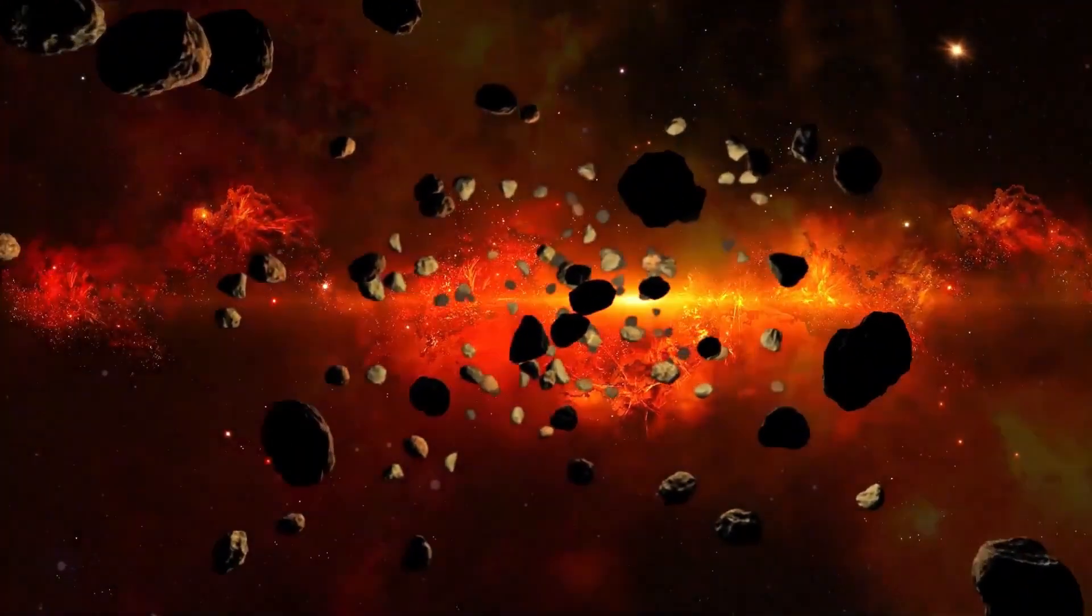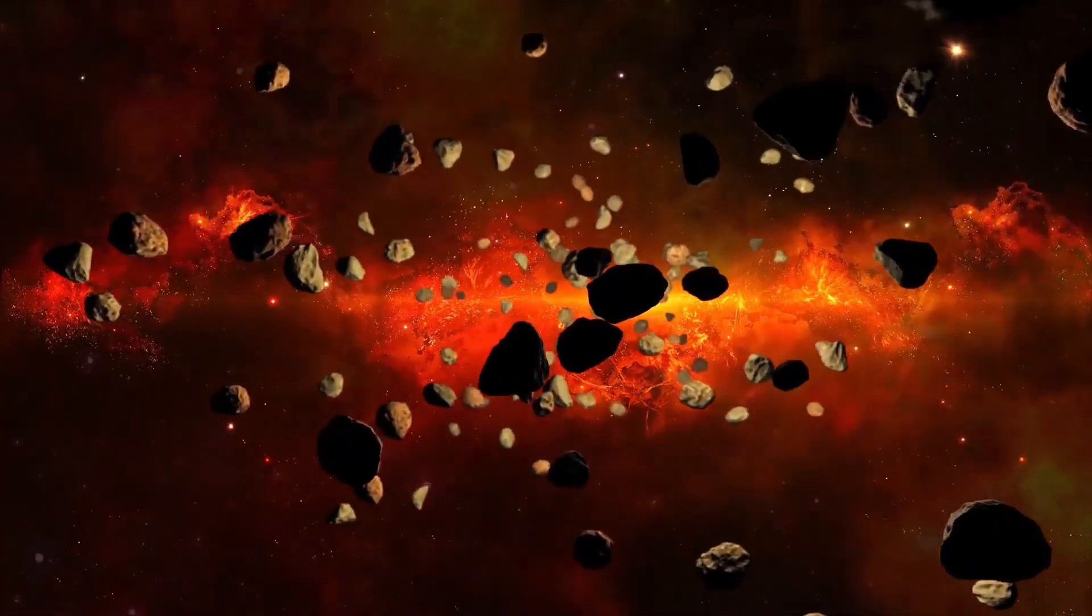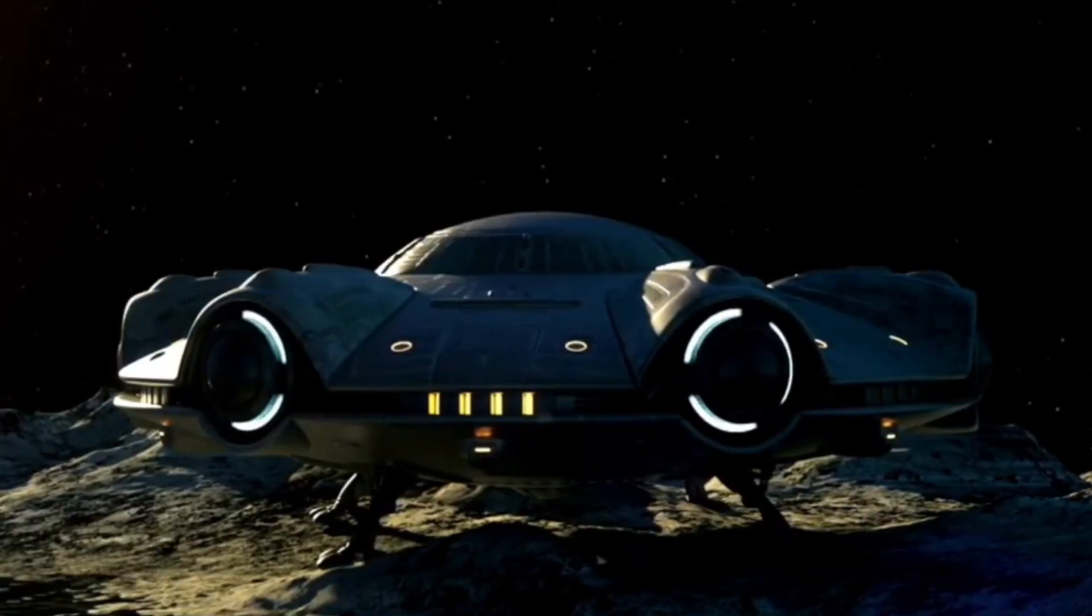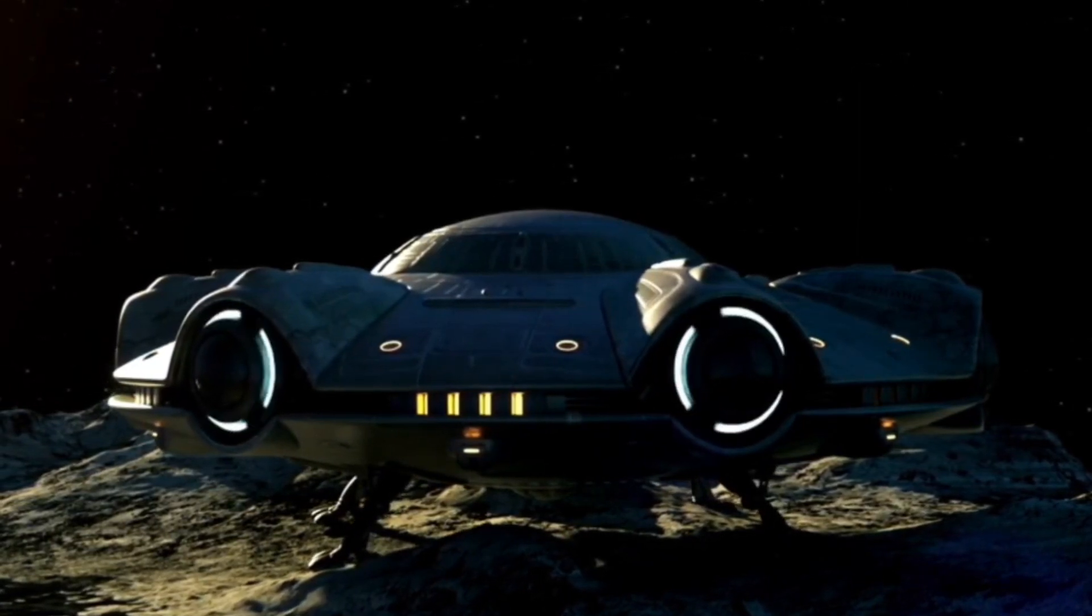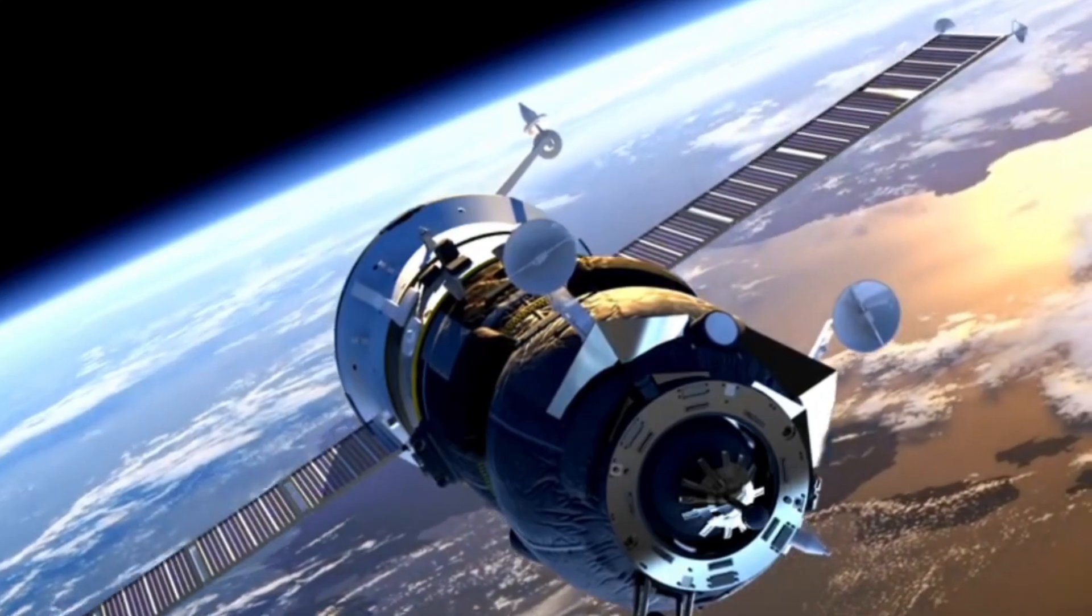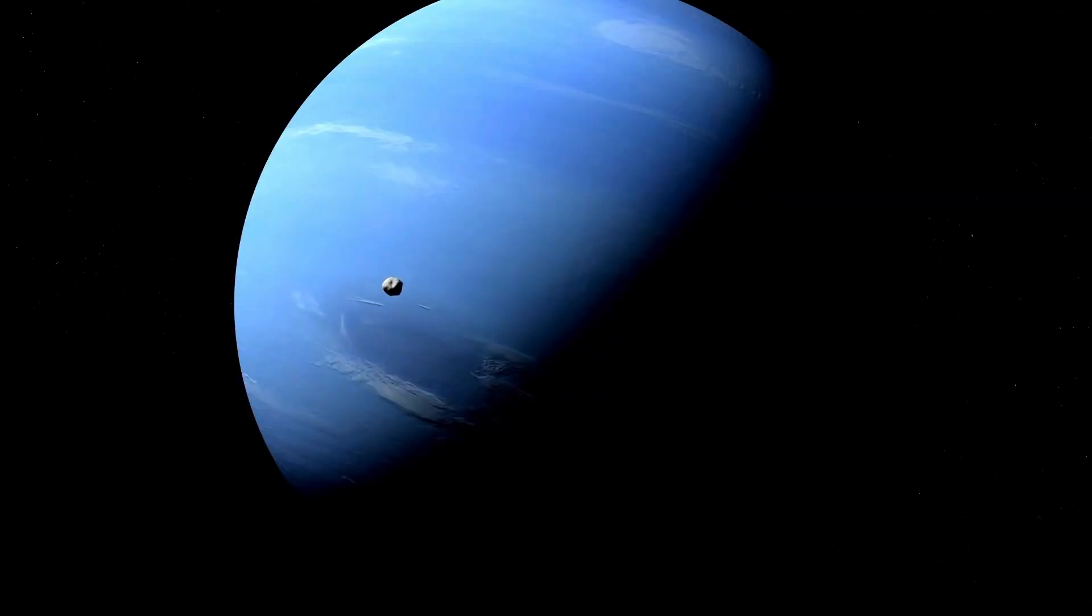Proxima Centauri emits roughly the same amount of energy from its star as Earth does from the Sun. Could this really mean that there's water on its surface and maybe even life? As we explore beyond our own solar system, we encounter a completely unique universe of exoplanets.